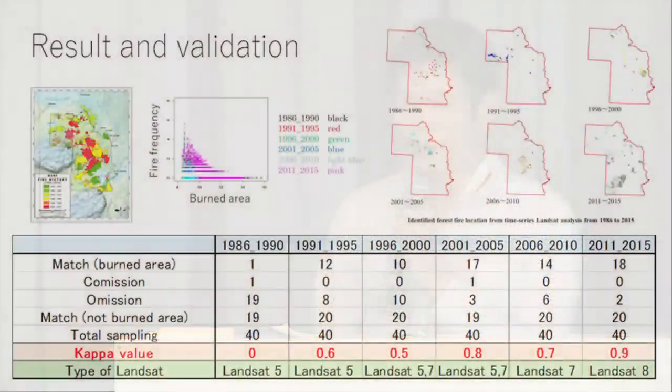This area is a national park — it's 45,000 square kilometers. What we found out is we analyzed the data from 1980 to 2015. The kappa value was pretty low around 1980, close to zero. But the end data is pretty good, around 0.9. So that is what we found from our analysis so far.